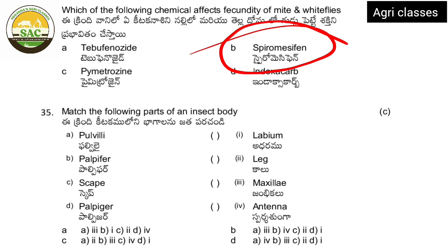Next: match the following entomology question. Terms given: palvilli, palpifer, scape, palpiger — these are related to mouth parts of biting and chewing type insects. The diagram helps identify: palvilli is related to legs — specifically the last tarsus. Palpifer is related to the maxilla. Maxillary palp is 5-segmented; labial palp is 3-segmented. So A=legs (tarsus), B=maxilla (palpifer).